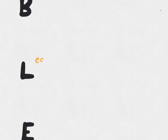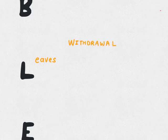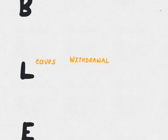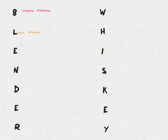L is for leaves, or withdrawal symptoms. This typically occurs when a patient who consumes sustained alcohol leaves it. Symptoms typically occur 4 to 48 hours after the last drink. Initial symptoms include tremor, sweating, and insomnia, and can progress to seizures, also called rum fits.